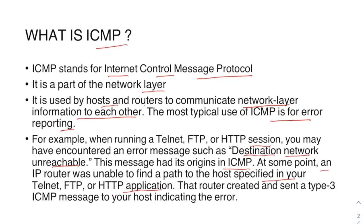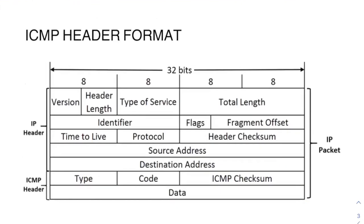What would have happened is that whatever web page you are opening has a stated IP address. A router was not able to find a path to that IP address, so the 'destination network unreachable' message appears. The router creates and sends a type 3 ICMP message to your host indicating the error. That's how ICMP is used for error reporting.